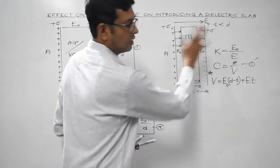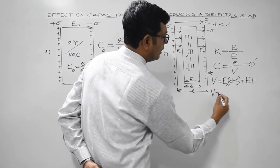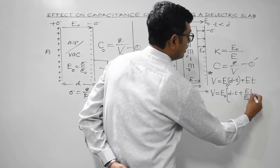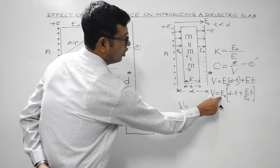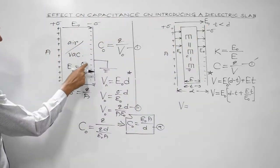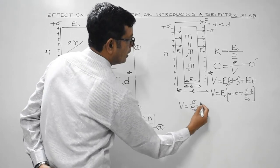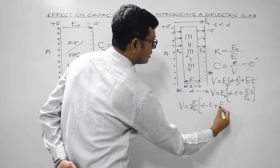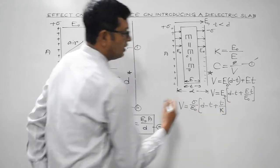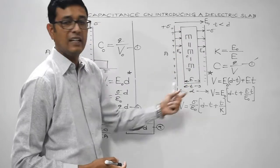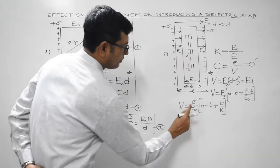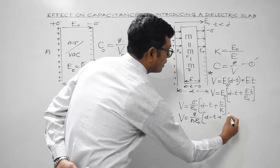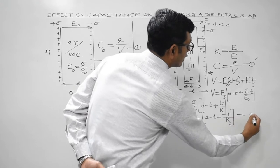Substituting values: V = E₀[(D − T) + (E/E₀)·T]. Since E₀/E = K, we have E/E₀ = 1/K, so V = E₀[D − T + T/K]. Now E₀ = σ/ε₀, and σ = Q/A (charge per unit area), so V = (Q/ε₀A)[D − T + T/K]. This is equation 2.